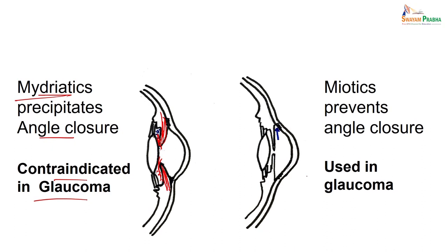Mydriatics are contraindicated in patients of glaucoma. On the other hand, when you give miotic agents this causes miosis, the ciliary muscles contract, the angle gets open, and this causes easy flow of the aqueous humor. So miotics are useful in glaucoma, whereas mydriatic agents can precipitate glaucoma, and mydriatic agents include all anticholinergic drugs.